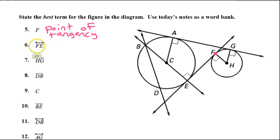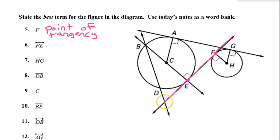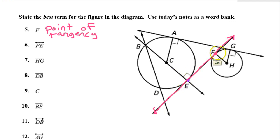Line FE — that is not only a tangent line, but it's a common tangent line because it is tangent to both of these circles.